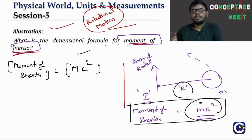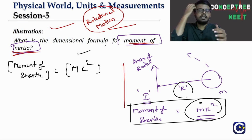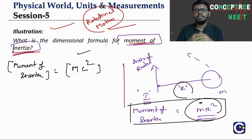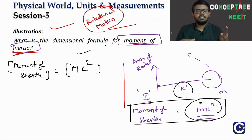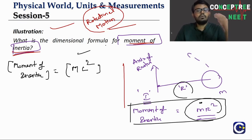As we see, we will learn about the gravitational constant in the gravitation chapter, coefficient of viscosity in the properties of fluid chapter, and moment of inertia in the rotational motion chapter. When you go to different chapters, you will be learning about all these physical quantities and their dimensional formulas.